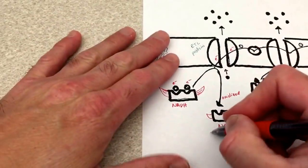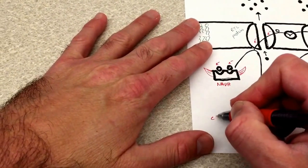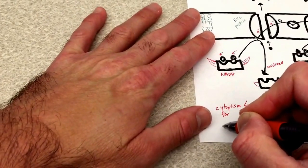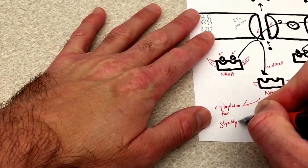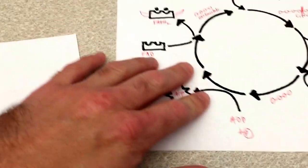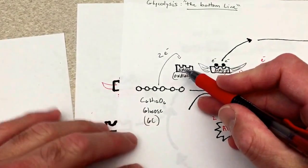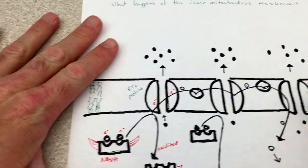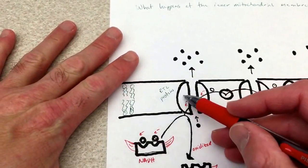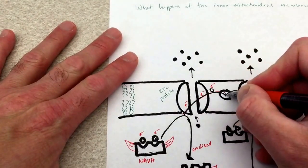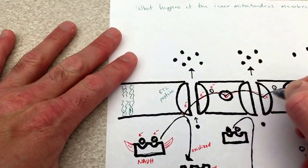An important question: what can we do with NAD+? Well, it can fly back out to the cytoplasm to work in glycolysis again. NAD+ can participate again in that reaction and pick up more electrons when we split the glucose molecule. Coming back here, these electrons are dropped off at this first electron transport chain protein and the electron is passed from one protein to another, to another, to another.